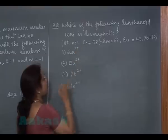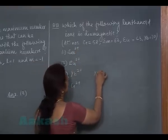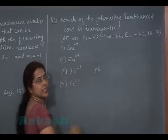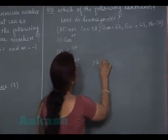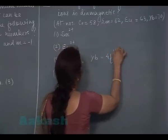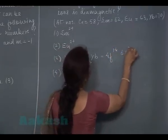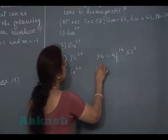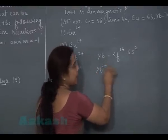In the given options, ytterbium, whose atomic number is 70, has electronic configuration 4F14 6S2. And if it is converted into ytterbium cation...